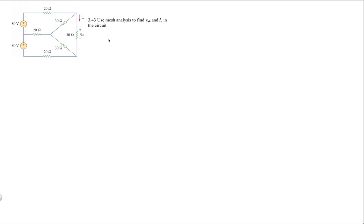This is problem 3.43 from the text. The problem calls for a mesh analysis to find the voltage VAB and the current I0 in the given circuit.